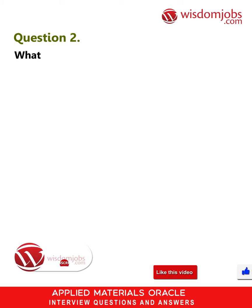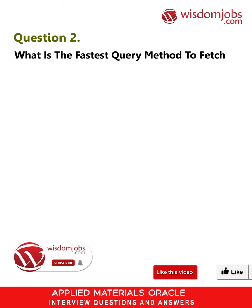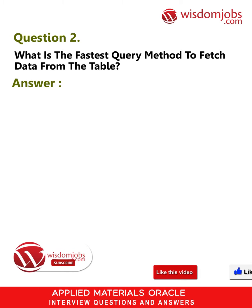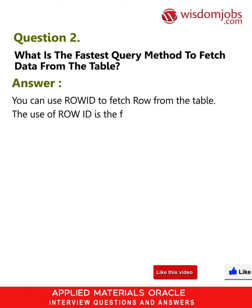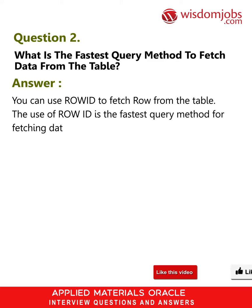Question 2: What is the fastest query method to fetch data from a table? Answer: You can use row ID to fetch a row from the table. The use of row ID is the fastest query method for fetching data from the table.